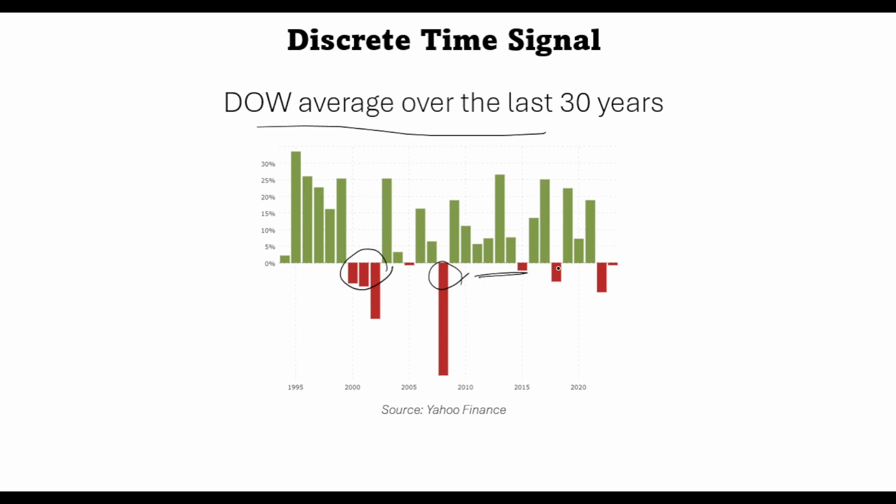Then the Corona crisis in 2020, and right now we are in the midst of a bear market. So this signal is a discrete signal because it is defined at discrete instances, which are the years in this case. It is defined at 1995, it is defined at 1999, 2000, and so on. So this is a signal which is inherently discrete.